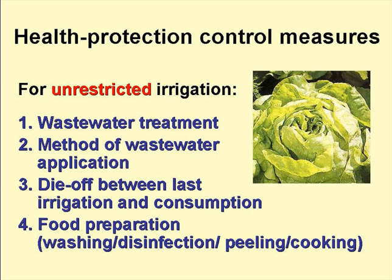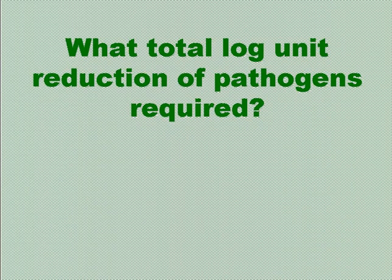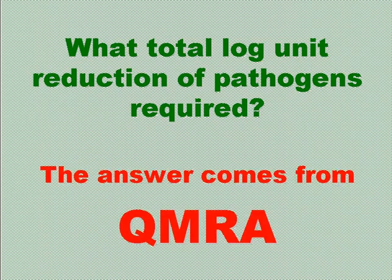How food that is eaten uncooked, such as salads and some vegetables, is prepared — including washing with clean water, disinfecting, and peeling — is also important. So the key question is: what is the total log-unit pathogen reduction required so that the tolerable rotavirus infection risk of 10 to the minus 3 per person per year is not exceeded? The answer comes from QMRA — quantitative microbial risk analysis. Ideally it should come from epidemiological data, but we don't have sufficiently good quality data to allow us to do this.